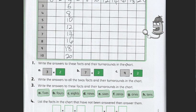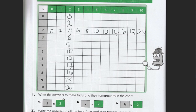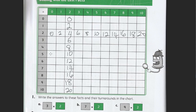Next it wants you to write the answers to the facts and their turnarounds in the chart. So A is the 5's. So we come in here and we look at all the 5 times tables.